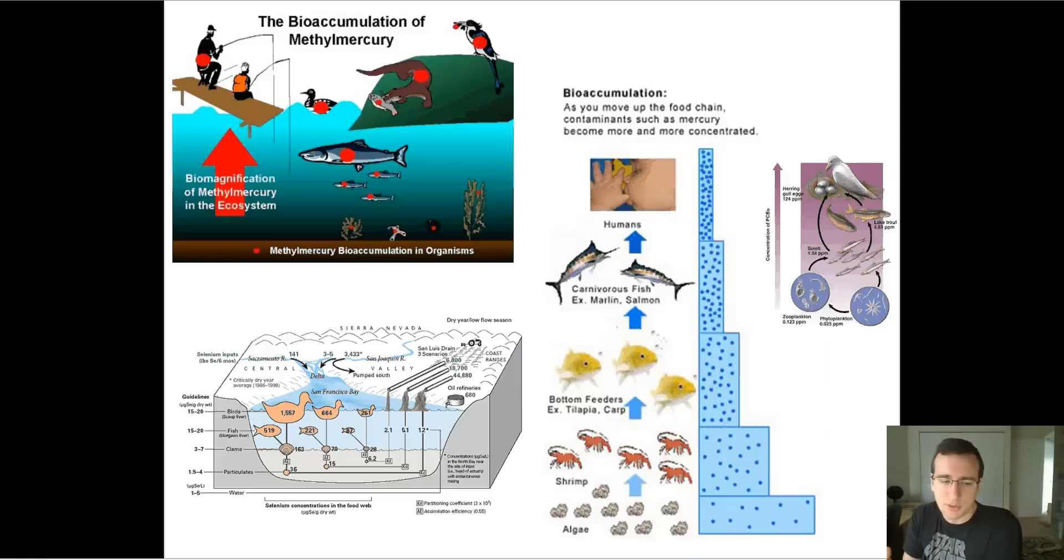And by the time you get to the bottom feeders like tilapia and carp that eat the shrimp, it becomes even more concentrated. Remember that the amount of matter is becoming concentrated into the predators, which are smaller and smaller numbers. So those toxins are going up the food web. As the pyramid is becoming smaller and smaller, remember the food pyramid is becoming smaller in terms of the numbers and the biomass? That means the toxins, the same amount of toxins, accumulate in less mass, so it's becoming more concentrated.